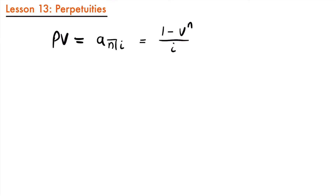We are familiar with this notation, but what if we wanted n, our number of payments, to be infinite? What if we wanted n to equal infinity, or have a series of payments that never ends — an infinite series of payments? What would we do in that case?